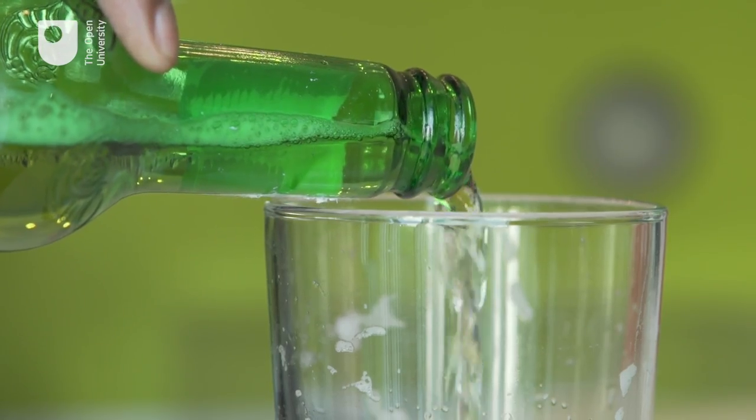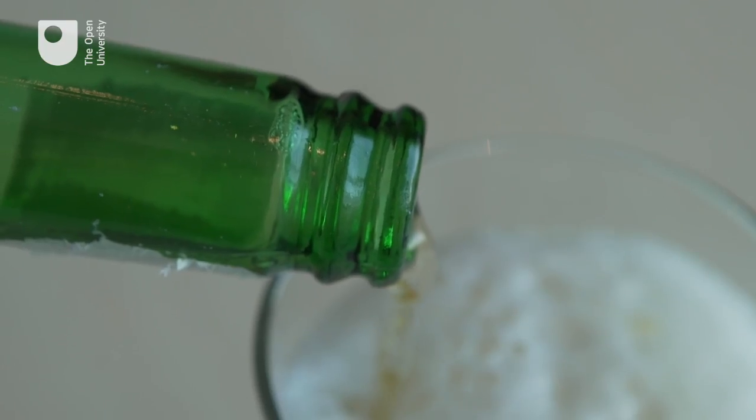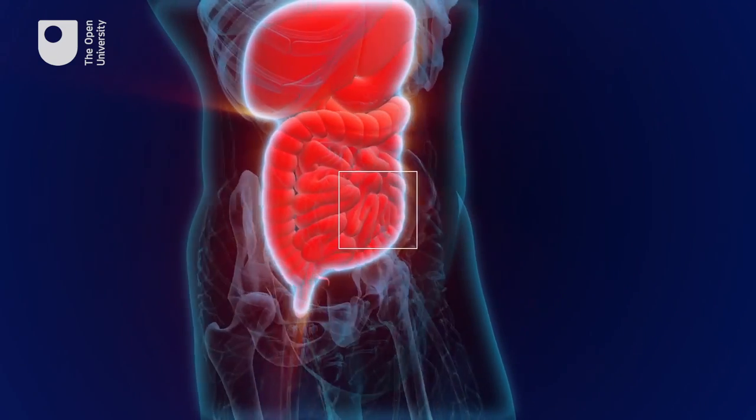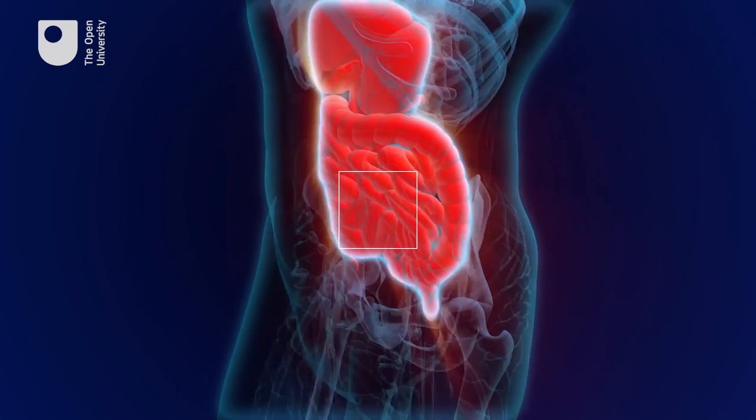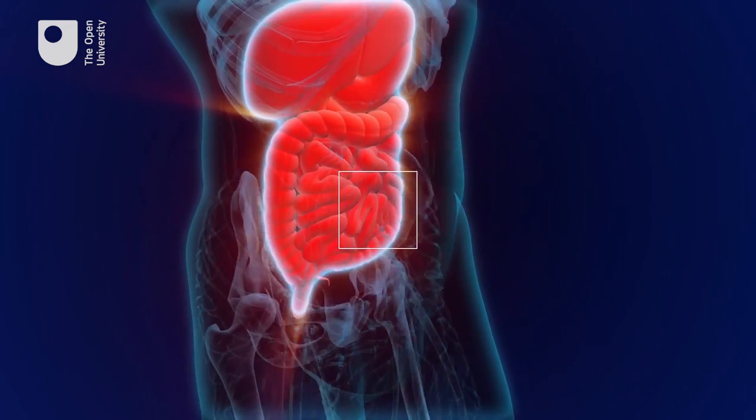Alcohol is one of many addictive substances, and for a substance to be addictive it has to change the way the brain functions. When we take alcohol into the body it's absorbed by the digestive system and released into the blood circulation. The rate of absorption can differ depending on many factors, one of which is whether you've recently eaten food before drinking. If you have, this can slow down the rate of absorption, which is why it's recommended that you never drink alcohol on an empty stomach.